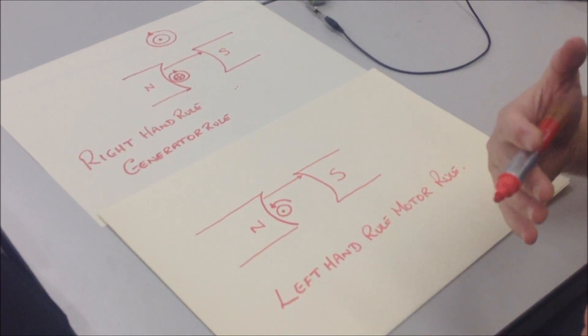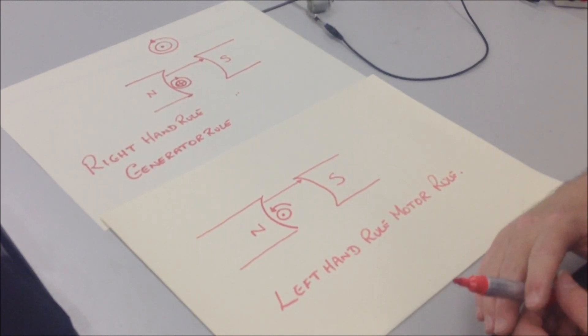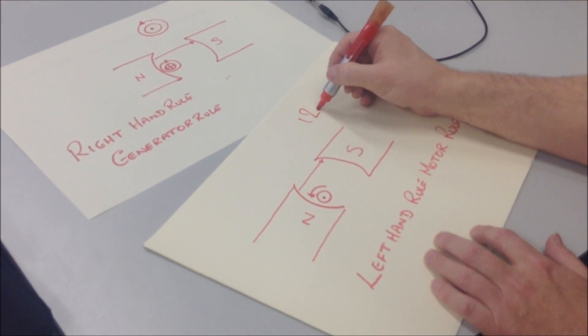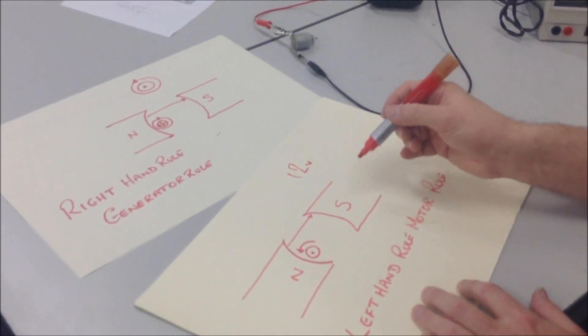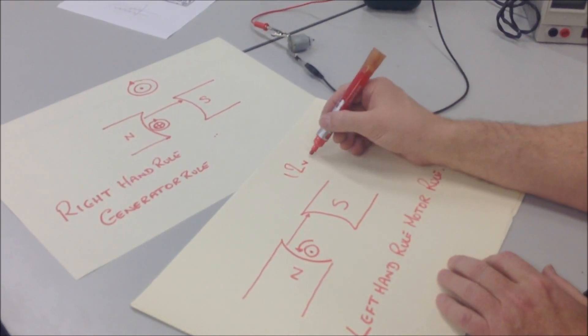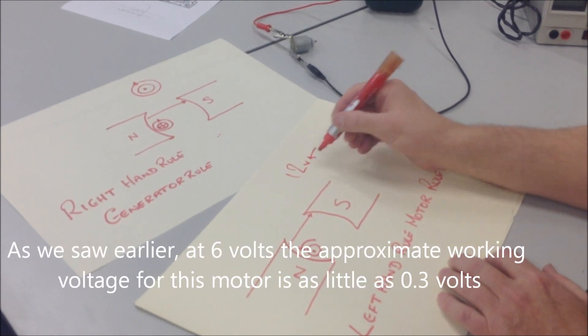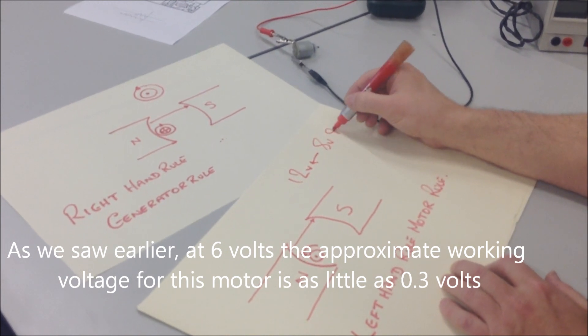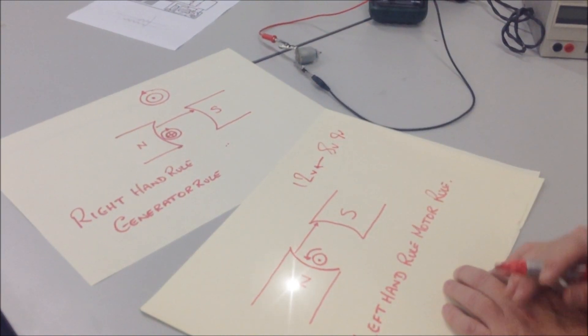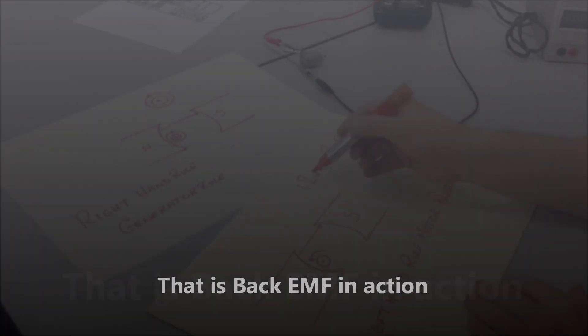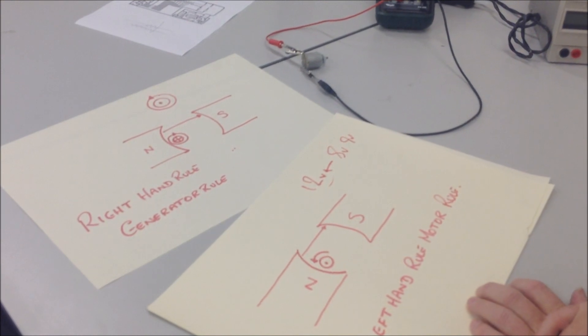This is why we have something called Back-EMF. Back-EMF is like saying, if we try to apply 12 volts across the motor, the motor will act as a generator, it will generate a voltage which is in opposition to that applied voltage. It could be 8 volts, it could be 9 volts, it just depends on the characteristics of the motor. But we never, ever get a situation when we use a DC motor where the full 12 volts is applied across it, and we've looked at that early.